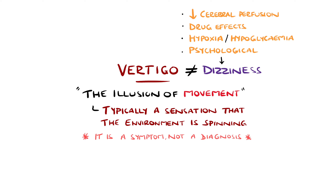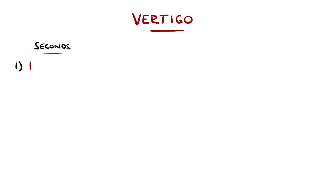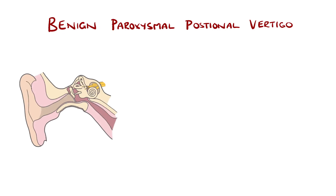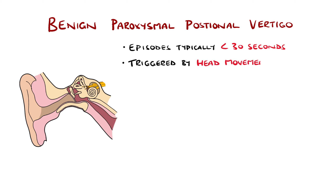To make them easy to remember, I divide the causes of vertigo based on the duration. The most common cause of vertigo is benign paroxysmal positional vertigo, or BPPV, classically featuring episodic vertigo lasting several seconds, typically under 30 seconds, and usually associated with a positional change of the head — for example, bending to pick something up or rolling over in bed.